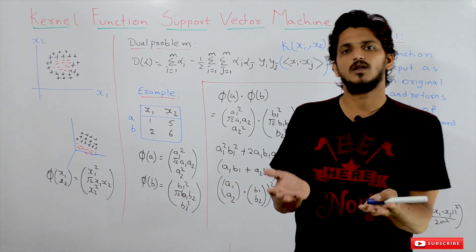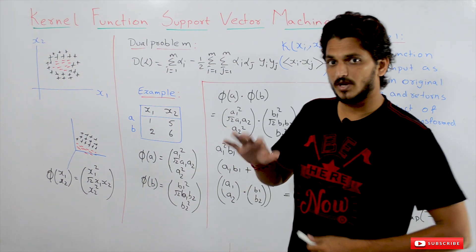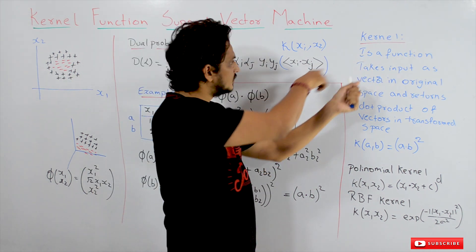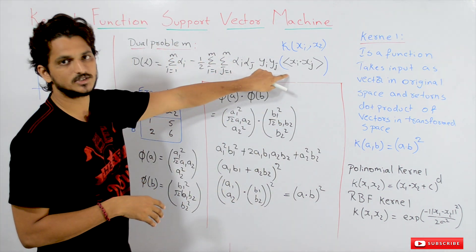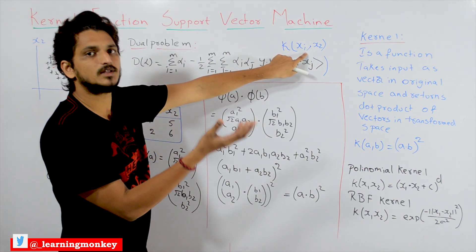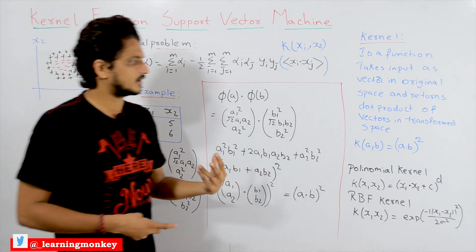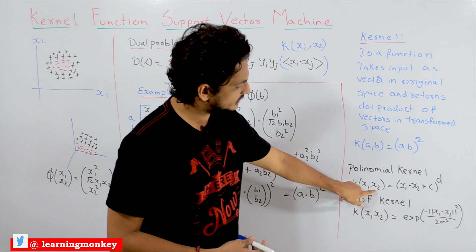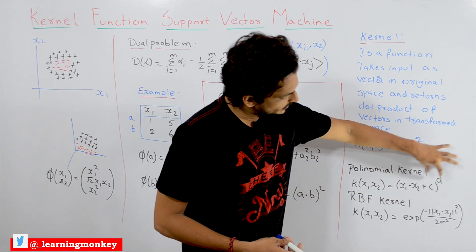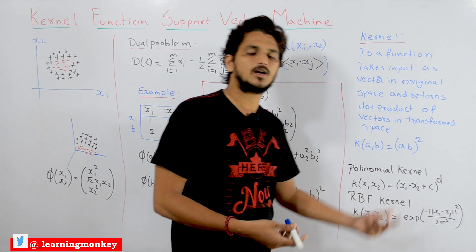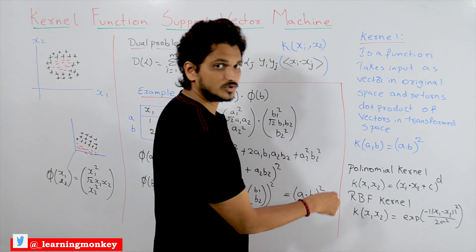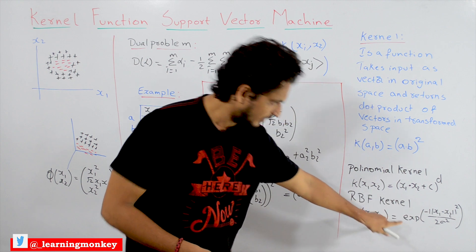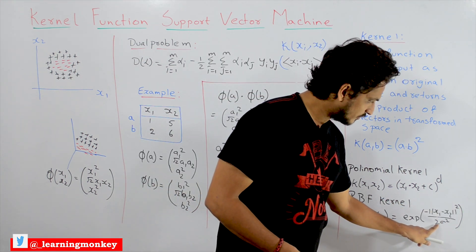That's the use of kernel functions in support vector machine. Without kernel functions, support vector machine is just like logistic regression. That's why SVM is so popular — it has the concept of kernel functions built into the optimization problem itself. That's why we solve the dual optimization problem — so we can implement kernels. There are domain-specific kernel functions, and some of the mostly used ones are: the polynomial kernel k(x1, x2) = (x1 dot x2 + c) to the power d, where d can be any power and c is a constant; and the RBF kernel, or radial basis function kernel: k(x1, x2) = exp(−‖x1 − x2‖² / 2σ²).